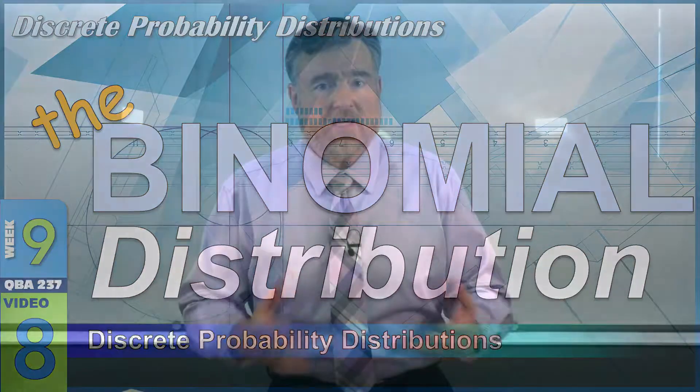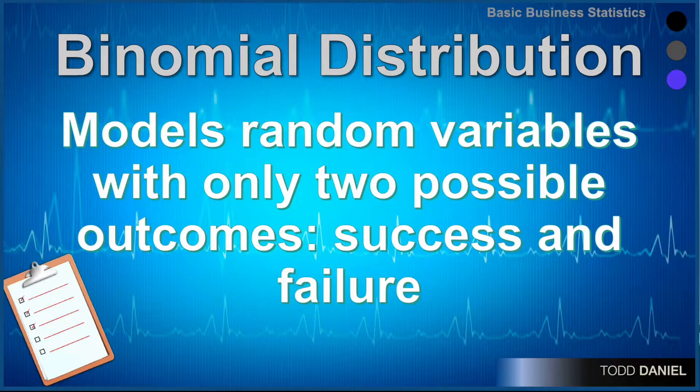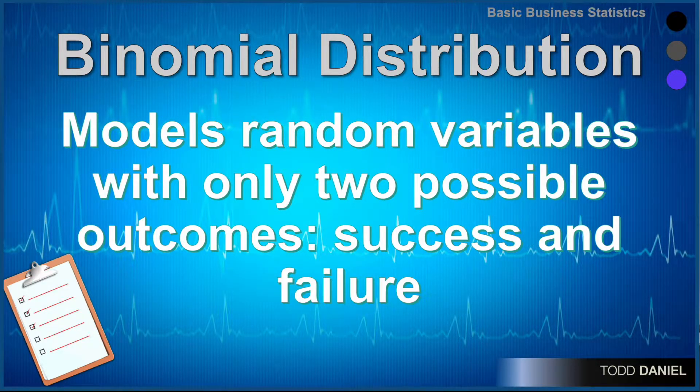Continuing with our discrete probability distributions, we will now look at a binomial distribution. In our last set of lectures we looked at a bivariate distribution. Bivariate means two variables. Binomial is referring to two possible outcomes. A binomial distribution models random variables with only two possible outcomes: success or failure.